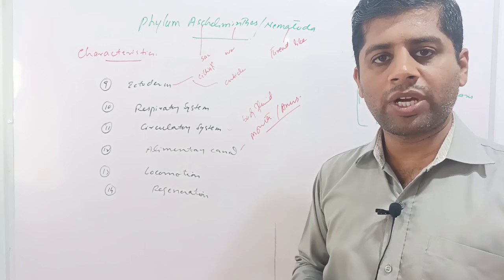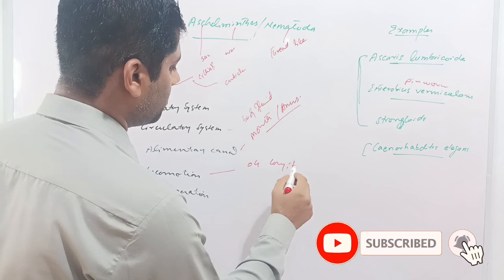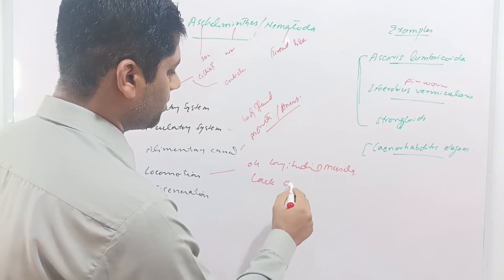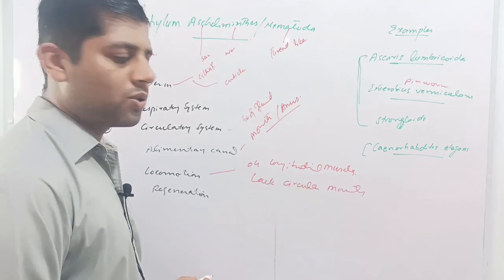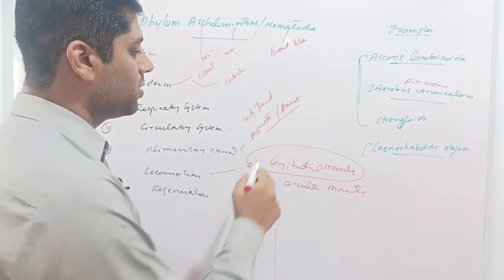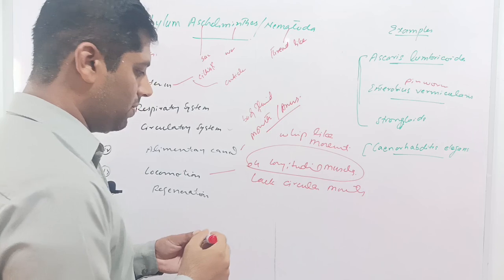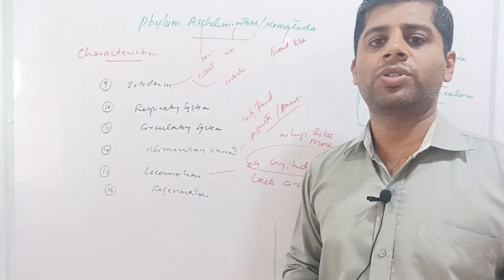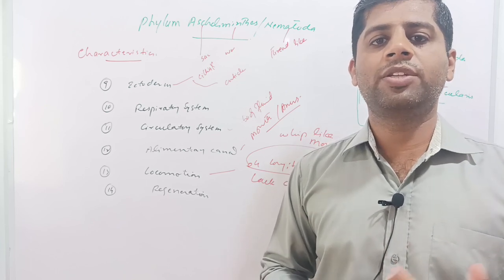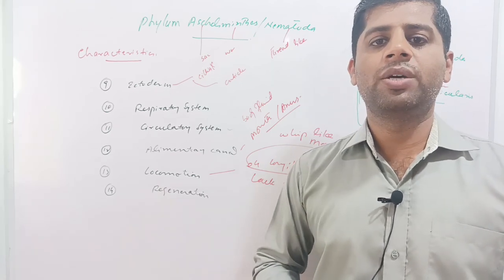Nematodes are motile and have a developed muscular system. They have four longitudinal muscles responsible for locomotion, but they lack circular muscles. The four sets of longitudinal muscles produce a whip-like movement in the animal. The capacity for regeneration is absent in nematodes — if parts are cut off, they cannot regenerate, and there is no fragmentation or asexual reproduction.